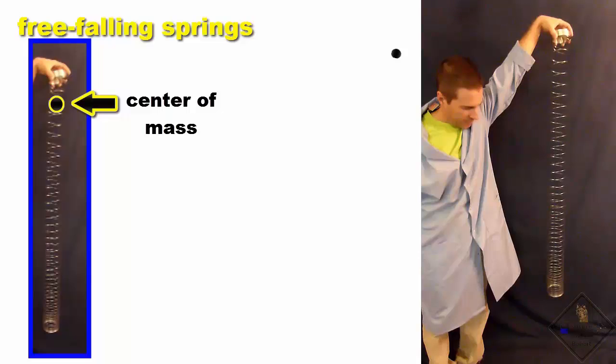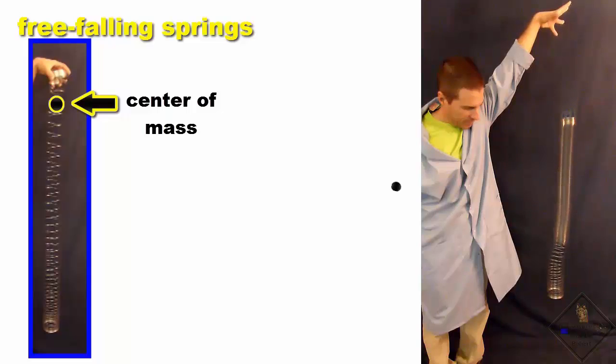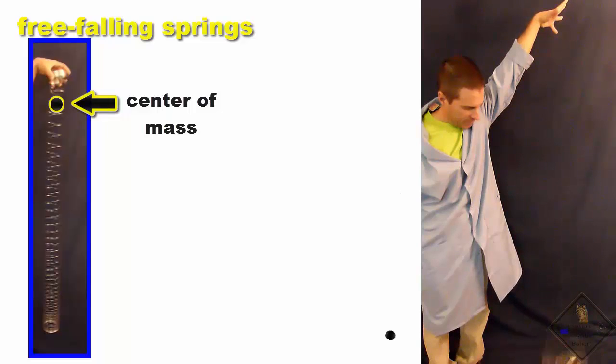The center of mass falls due to gravity until it reaches the bottom of the slinky, and then the entire slinky falls just as any uncompressed slinky falls.